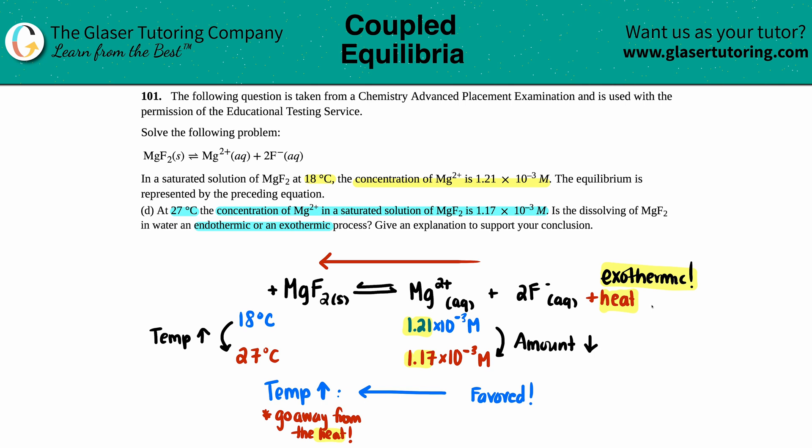Give an explanation to support your conclusion: basically everything we just said — Le Chatelier's principle states that as temperature increases you go away from the heat, therefore the dissolving of MgF₂ is exothermic. I really hope this helped. Let me know in the comments, thank you so much for viewing, subscribe to the channel, and I hope to talk to you in later lessons — have an awesome day!